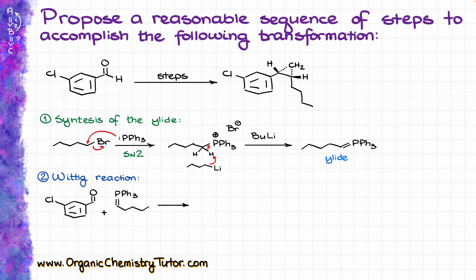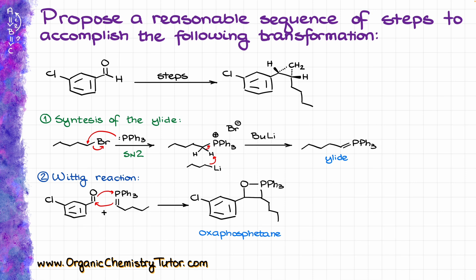Once we have our ylide, we can do the Wittig reaction. We don't have any special conditions — we simply take the ylide we just created and react it with our aldehyde. I'm going to use the shorter version of this mechanism, which gives the oxaphosphetane intermediate directly, skipping the betaine intermediate. Some instructors like to show everything with the betaine, but for the sake of space and time I'm going to skip that middle step. Once we have our oxaphosphetane, it undergoes decomposition, giving us our Z-alkene and triphenylphosphine oxide as the co-product, which we wash away during the workup.